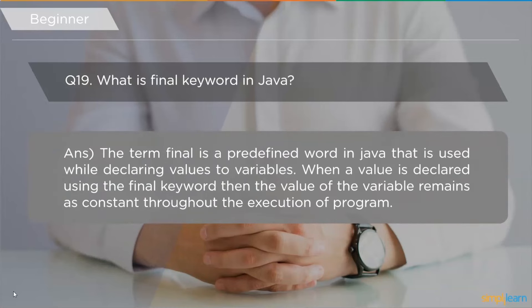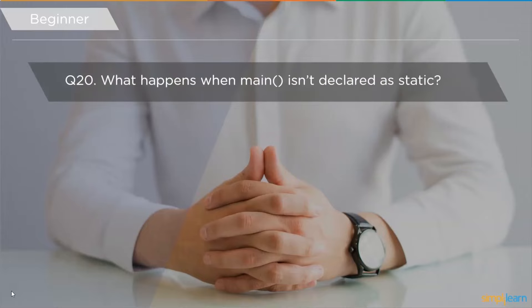The next question is: what is the final keyword in Java? The term 'final' is a predefined keyword used while declaring values to variables. When a value is declared using the final keyword, that variable's value remains constant throughout the execution of the program. No operations or manipulations applied to that variable will change its value.